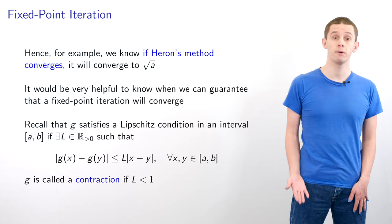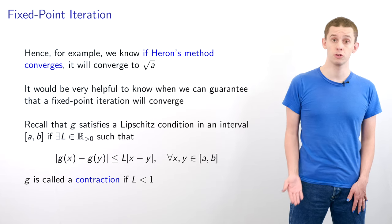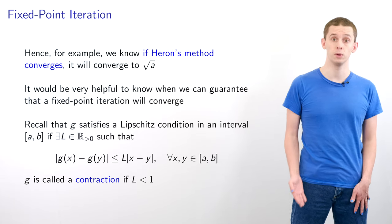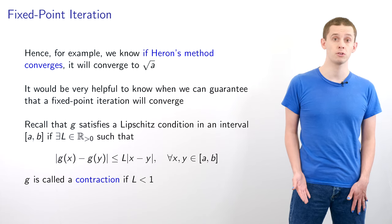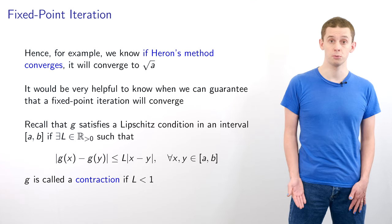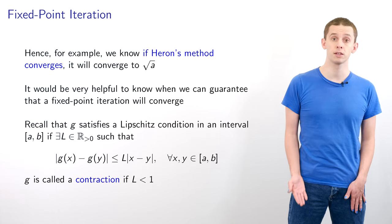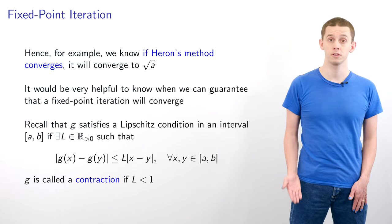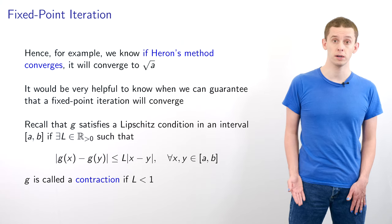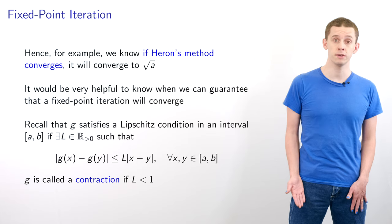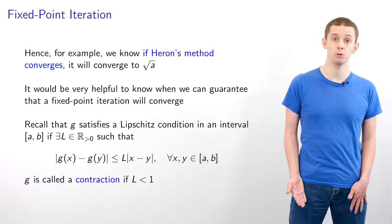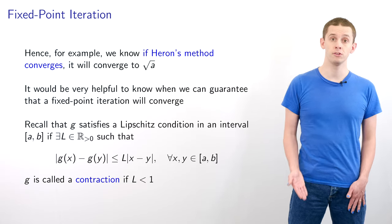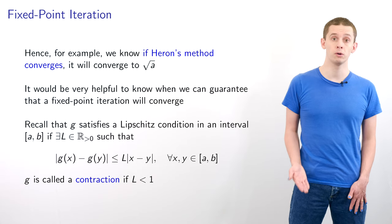Hence, if we know that Heron's method converges then it will converge to √a. It would therefore be very useful to guarantee convergence, and to do this we can use a Lipschitz condition from unit 3. Suppose g satisfies a Lipschitz condition on [a, b]: we can find a positive constant L such that |g(x) − g(y)| ≤ L|x − y| for any x, y in [a, b]. If L < 1, we call g a contraction.